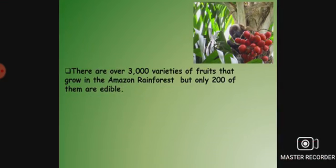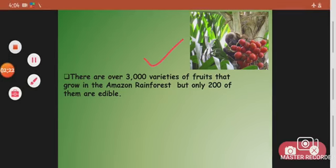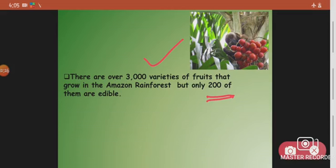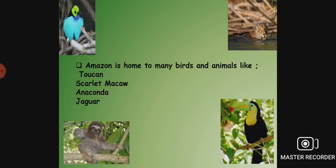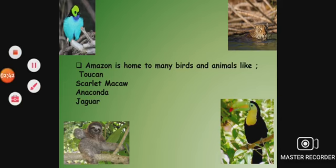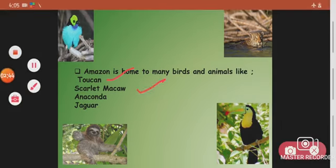Coming to the fruits, there are around 3,000 varieties of fruits in the Amazon forest, but out of which only 200 are edible. So if you ever plan a trip to the Amazon rainforest, you'll have to carry some food for yourself. Amazon is also a home to many birds and animals, including the toucan, scarlet macaw, anaconda, and jaguar.